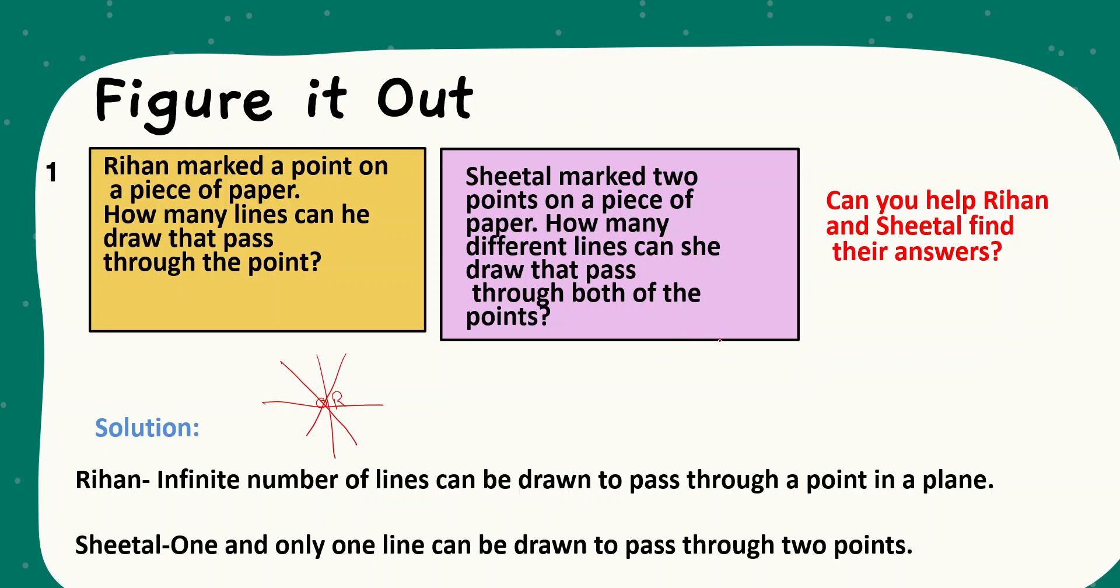Similarly, but Shirtel marked two points. Assume this is A and B. Now, passing through this point, Shirtel can only draw a single line. Therefore, one and only one line can be drawn by passing through two points.